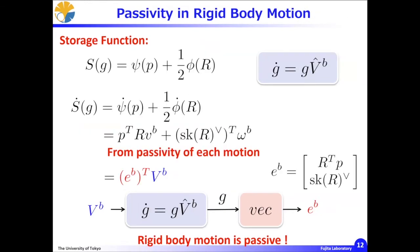Now let us combine the previous two results. For rigid body motion with translation and rotation, we can define the storage function S(Z) as psi(P) plus phi(R) — just the sum of the previous two storage functions. Then, by taking the time derivative, it is again easy to show that the rigid body motion becomes passive. This is the key for our analysis.